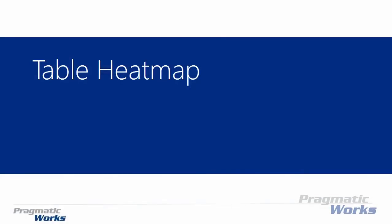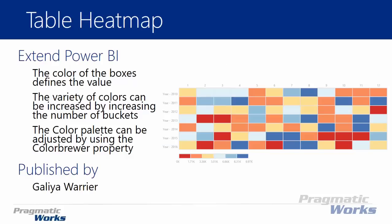Hi and welcome back to the Power BI Custom Visuals course. In this module we're going to be looking at the table heat map. The table heat map is an interesting visual — it allows you to take what looks like a table, almost like a matrix or pivot table, and instead of showing values in the middle, it uses colors that are representative of the values in your data set. There's a property called Color Brewer which allows you to modify and adjust the colors you can use.